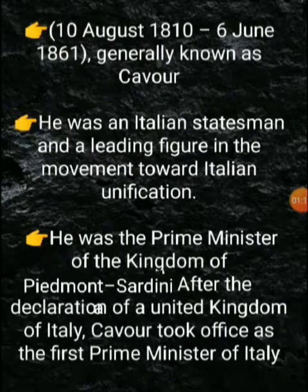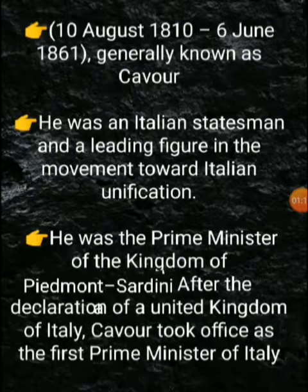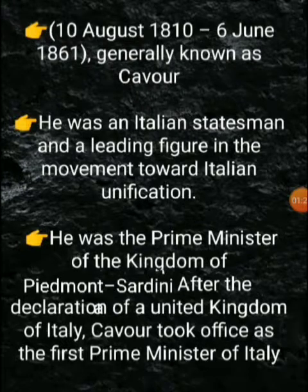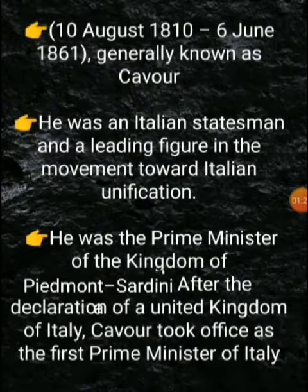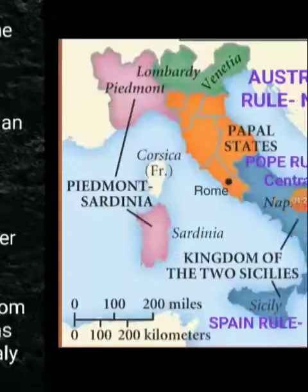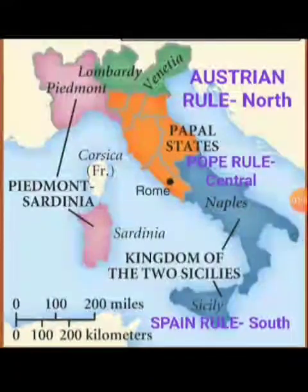He was the Prime Minister of the Kingdom of Piedmont-Sardinia, which was a part of Italy. After unification, he became the first Prime Minister. Now let's look at the map — Piedmont-Sardinia is marked in pink color.